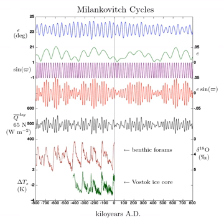Mars: Mars has no moon large enough to stabilize its obliquity, which has varied from 10 to 70 degrees. This would explain recent observations of its surface compared to evidence of different conditions in its past, such as the extent of its polar caps.